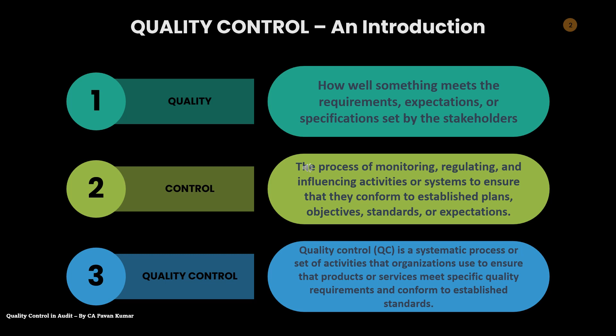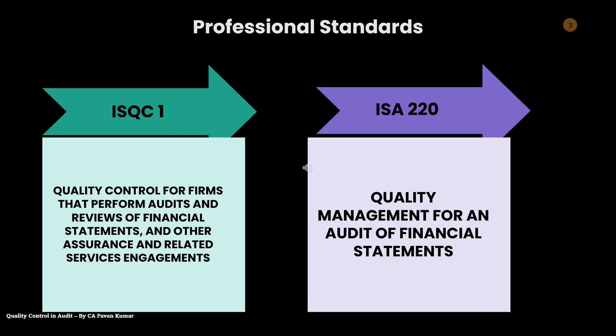Then what is quality control? Quality control is a systematic process — it refers to a set of activities an organization uses to ensure that whatever product they manufacture or whatever service they render meets the requirements, the standards, or the law.